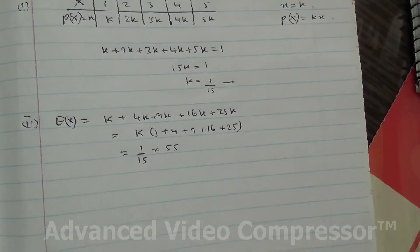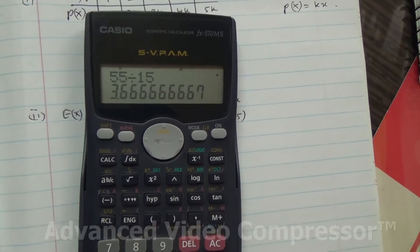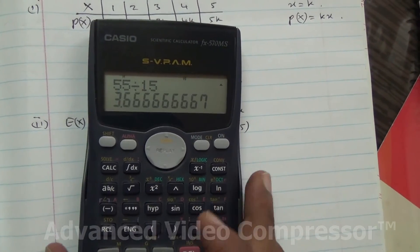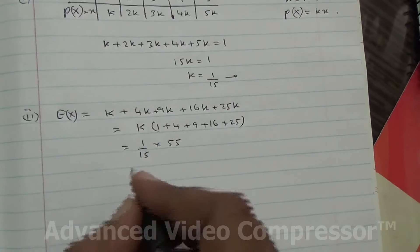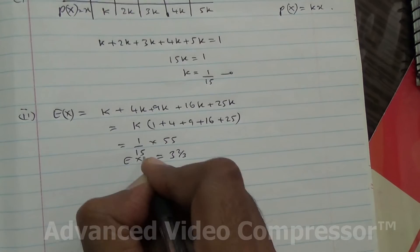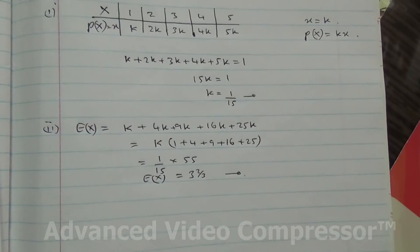So, 55 over 15 is going to give us 3 and 2/3, or 3.667. So E(X) equals 3 and 2/3. And here we are for the expectation of X, that is E(X), for question number 2.